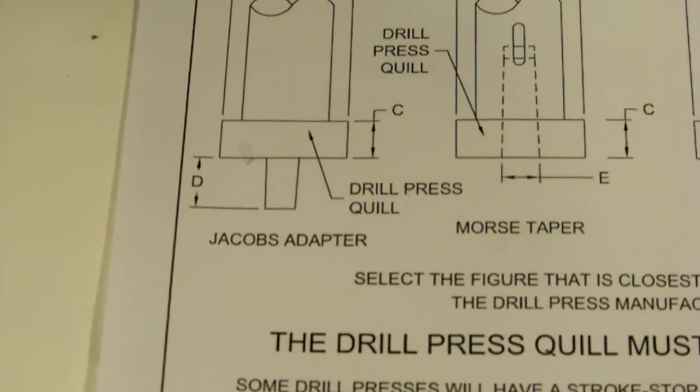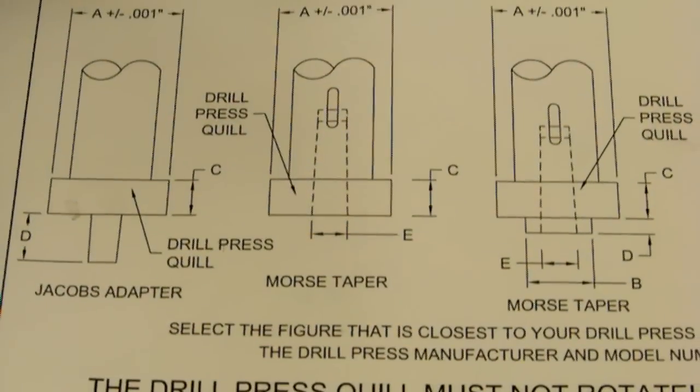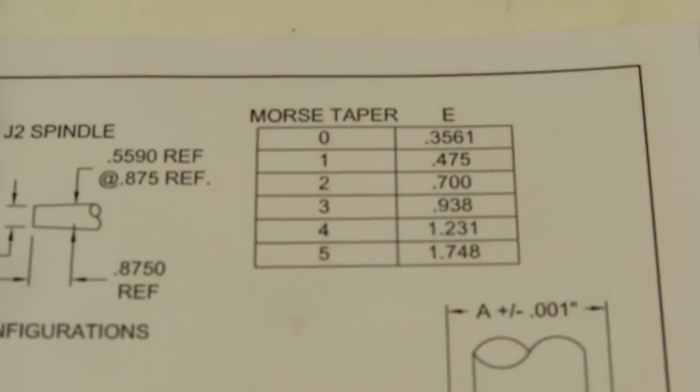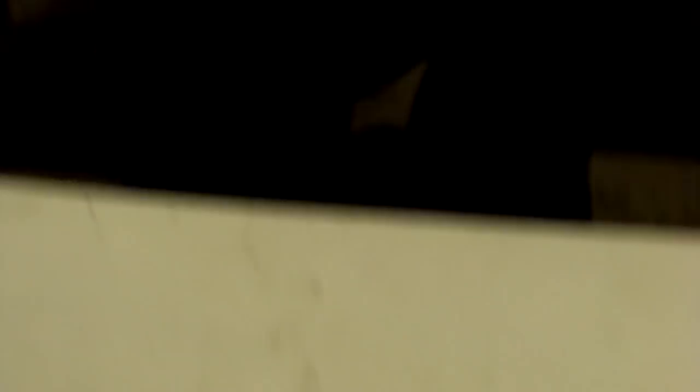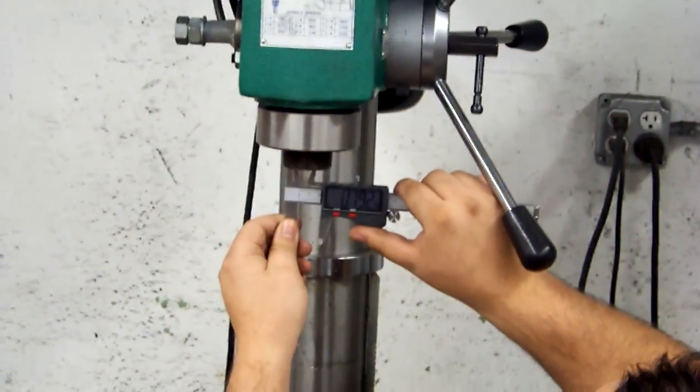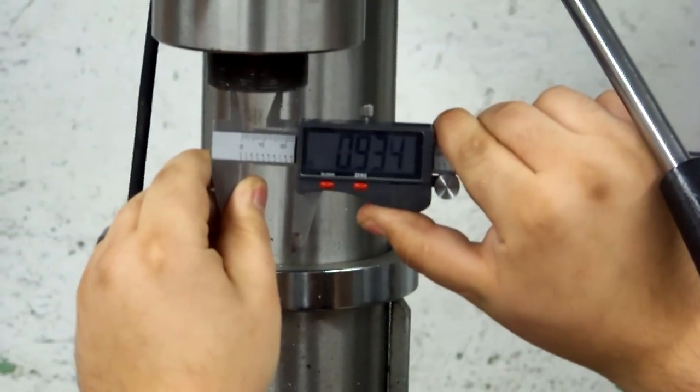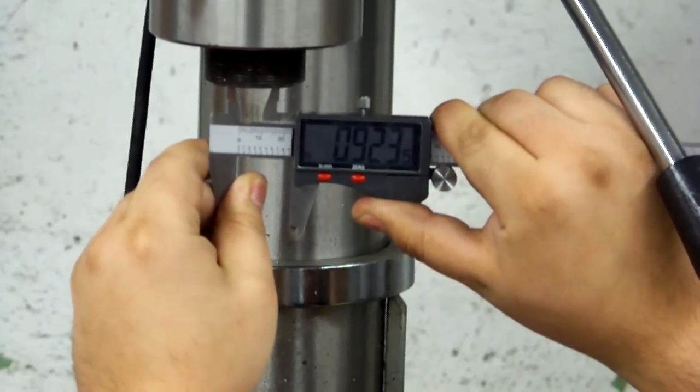The EAT dimension here is the Morse taper opening, which is a very important dimension. You'll also see a chart that shows the typical dimensions for all Morse tapers. So simply just use a caliper, measure underneath, and you should get the accurate dimension, which for this machine should be 0.938.